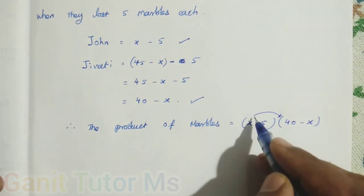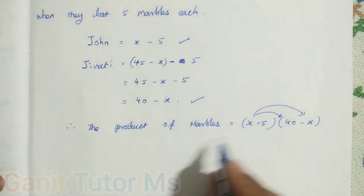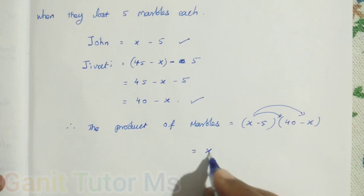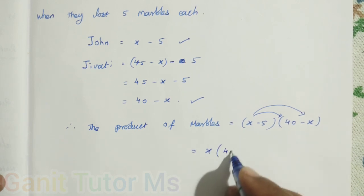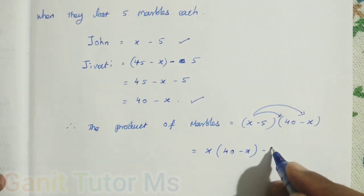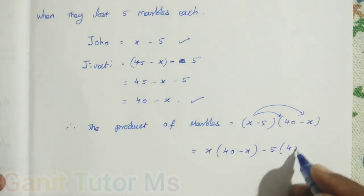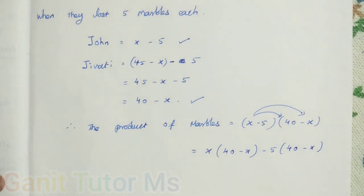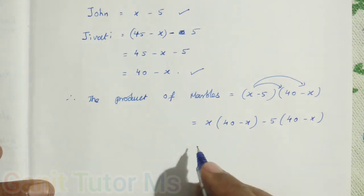x into 40 and x into x. Be very careful. x equal to x into the whole term, 40 minus x. Then minus 5 into 40 minus x.